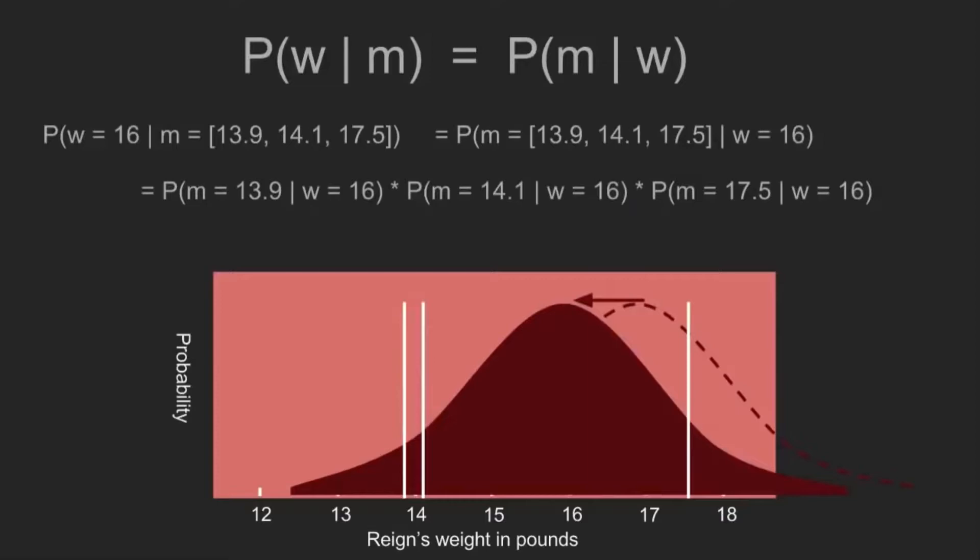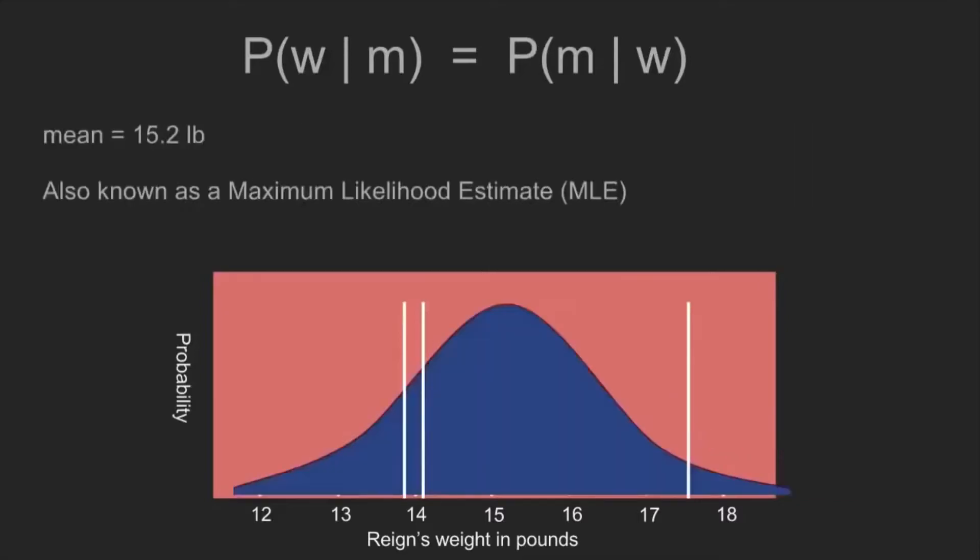We shift our belief over and say, well, what if she was 16 and a half pounds? What if she was 16 pounds? And we recalculate it each time, multiplying all of those actual probabilities together. And then by the time we're done, this is what we've measured at each of those weights. This is the likelihood of each of those occurring. And you can see that the maximum likelihood occurs at 15.2 pounds. And this is commonly called the maximum likelihood estimate, where you start with a uniform assumptions on your weight.